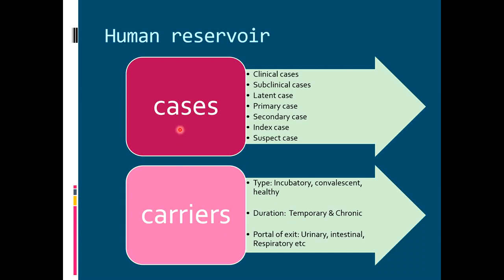Cases can be subdivided into different categories. Clinical cases are those who exhibit the full range of clinical signs and symptoms suggestive of the disease. For example, in COVID-19 there is dry cough, loss of smell, and loss of taste. These are clinical cases in which the clinical signs and symptoms are evident.